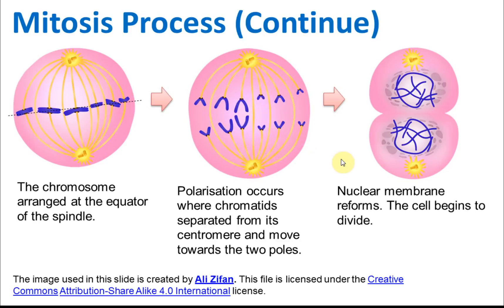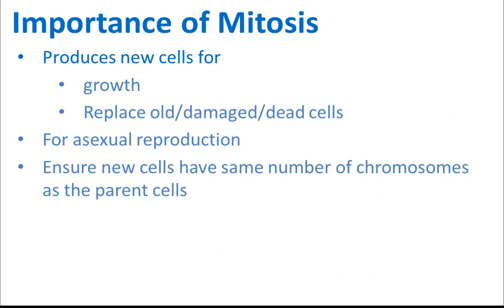After that, the nuclear membranes reform again and the cell begins to divide. The nucleus membranes form, and the cell divides to become two identical cells. This is how mitosis occurs.